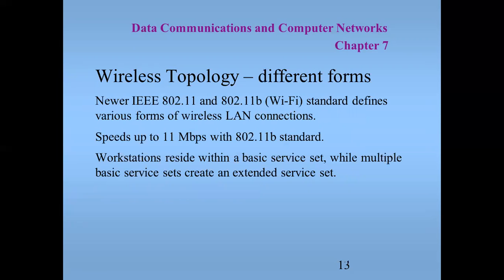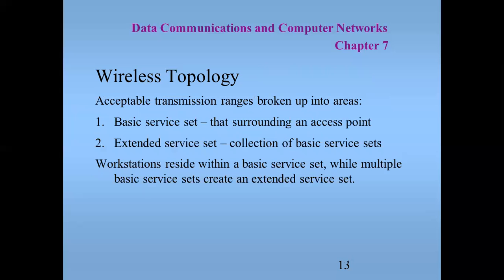There are also different forms. The newer IEEE 802.11 and the 802.11b Wi-Fi standard defines various forms of wireless LAN connections, with speeds up to 11 megabits per second with the 802.11b standard. Workstations are received within a basic service set, while multiple basic service sets create an extended service set.